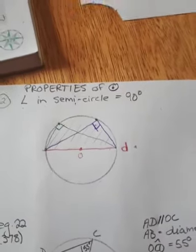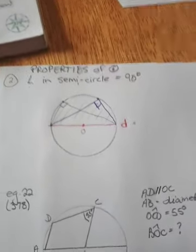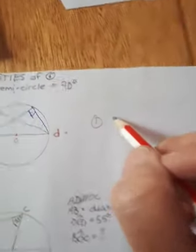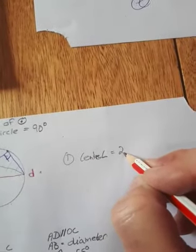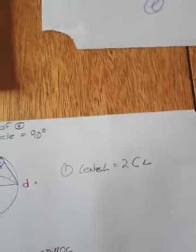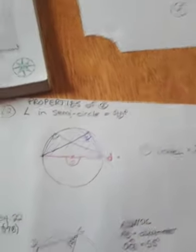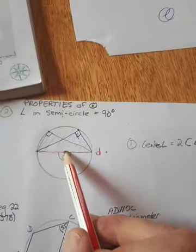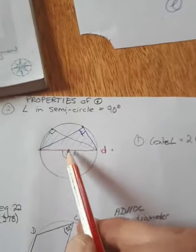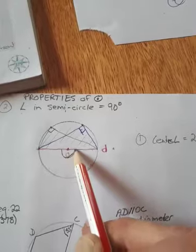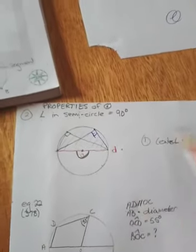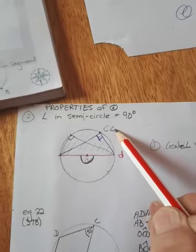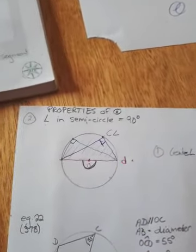I want to quickly refer you back to another law we've already done. That law says the center angle is equal to twice the circumference angle. Now let's look at this. This part is a center angle — the center is O. If you have two radii, they can lie in any way, and they form a center angle. Then if you look from these two ends, you have here a circumference angle, from the same arc.